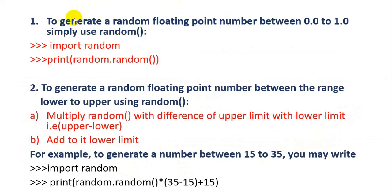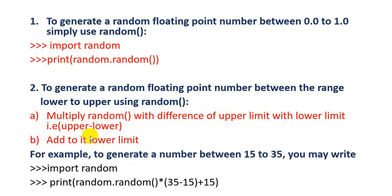We will see how these functions work. First, to generate a random floating point number, you have to use random.random(). You also need to import the random module first. To generate a random floating point number between a lower and upper bound using the random() function, you multiply random() by the difference of the upper limit minus the lower limit, and then add the lower limit — that is: random.random() * (upper - lower) + lower.